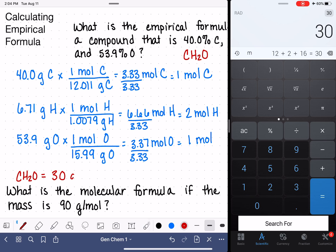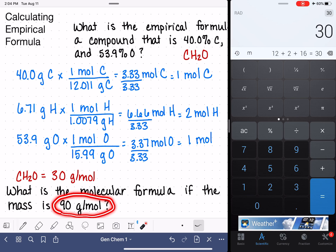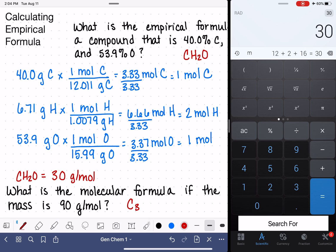CH2O is 30 grams per mole. If we know that the molar mass is 90 grams per mole, we can see that 90 is 3 times greater than 30. So we're comparing these two masses, and that means that the molecular formula must be 3 times greater than the empirical formula, C3H6O3.